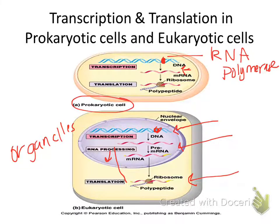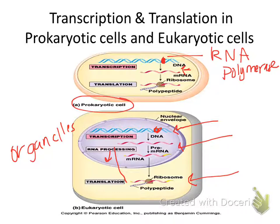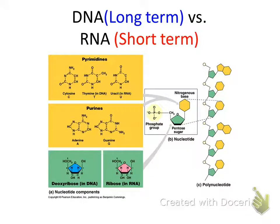mRNA is a single-stranded molecule — therefore it is less stable. RNA is a single-stranded molecule; it's less stable and it probably evolved first. DNA serves as a template for making RNA. A pairs with U, C pairs with G. Transcription is considered the first part of making the protein — protein synthesis. That's RNA right there.